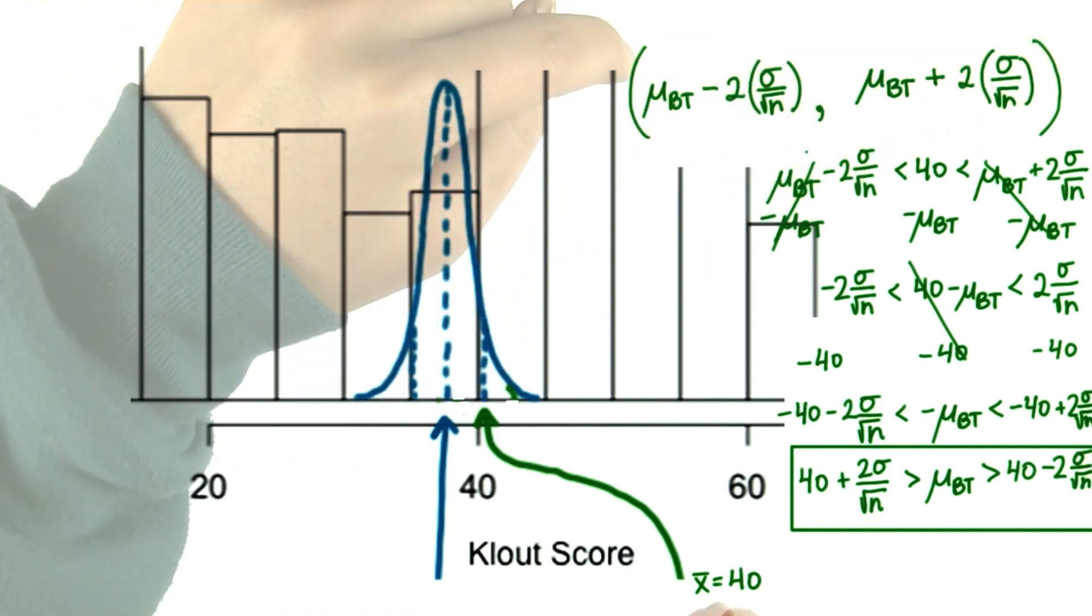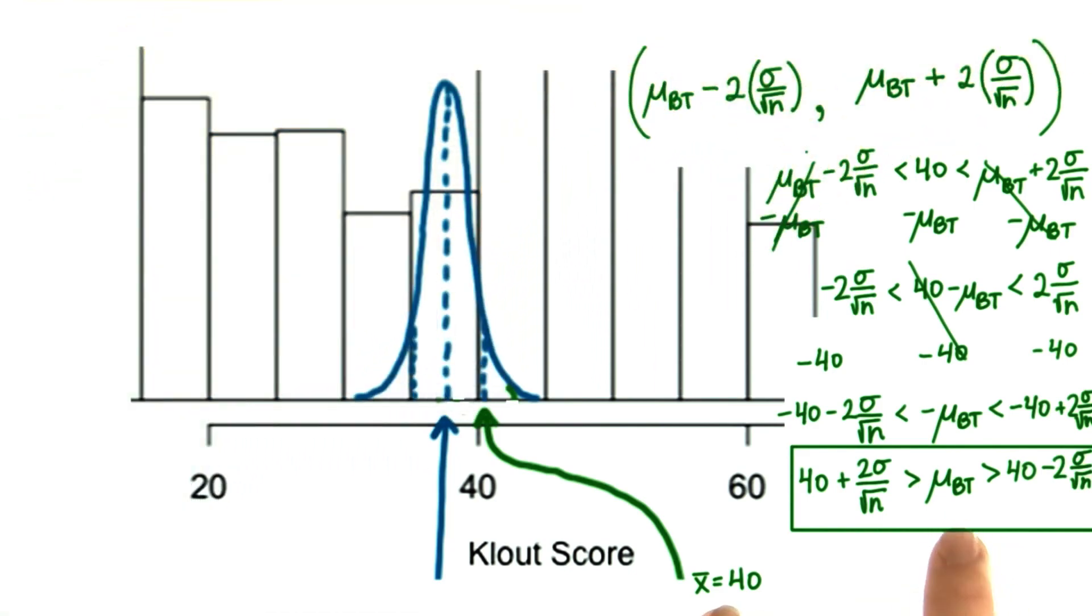And if that's the case, we're pretty sure that the population mean, then, is between this sample mean plus or minus 2 times the standard error.